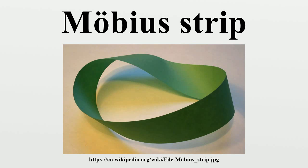Cutting creates a second independent edge, half of which was on each side of the scissors. Cutting this new, longer strip down the middle creates two strips wound around each other, each with two full twists. If the strip is cut along about a third of the way in from the edge, it creates two strips. One is a thinner Möbius Strip — the center third of the original strip, comprising one third of the width and the same length as the original strip.